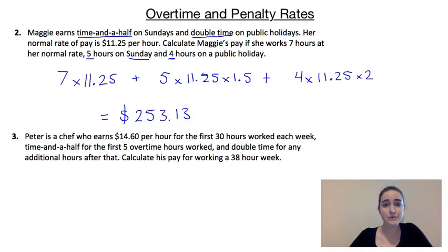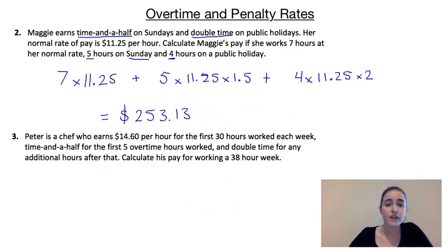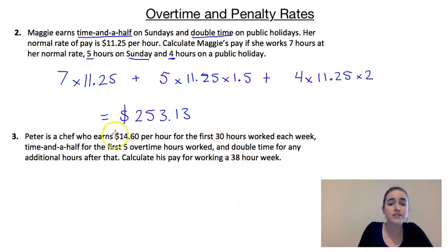Let's have a look at one last example. Peter is a chef and he earns $14.60 per hour for the first 30 hours he works each week, time and a half for the first five overtime hours worked — so if he works more than 30 hours, the next five hours over that he's getting time and a half — and anything above that he's getting double time. We're asked to calculate his pay for working a 38-hour week. For the first 30 hours, we go 30 × $14.60.